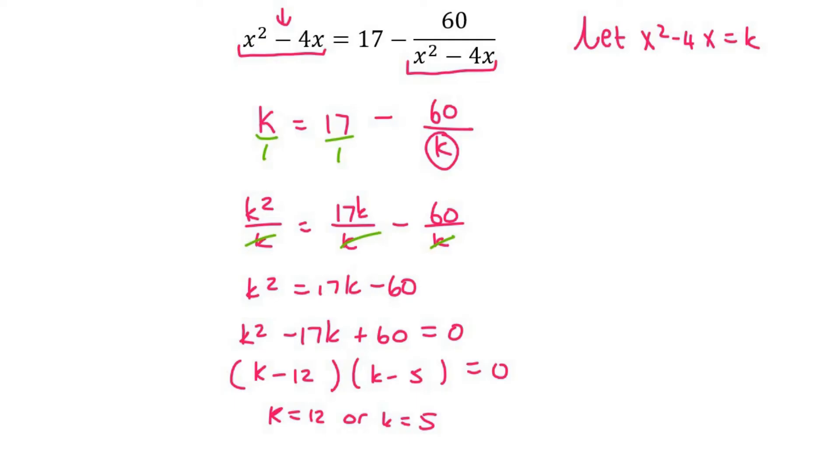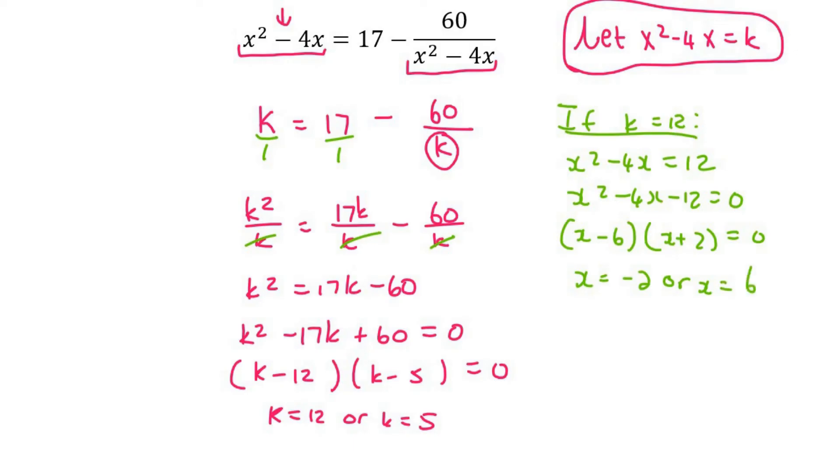So now what we do is we realize that that's not the answer. We need to now come back to this. So what we can now say is if k equals 12, then we can go work out x, so we can say x² minus 4x equals to 12, and so x² minus 4x minus 12 equals to 0. And this one does factorize pretty nicely as x minus 6 and x plus 2, and so x is going to be equal to negative 2 or x is going to be equal to 6.